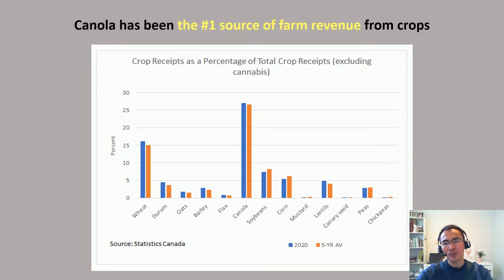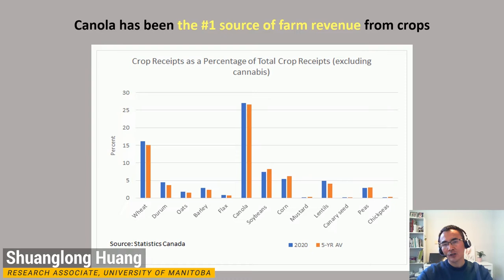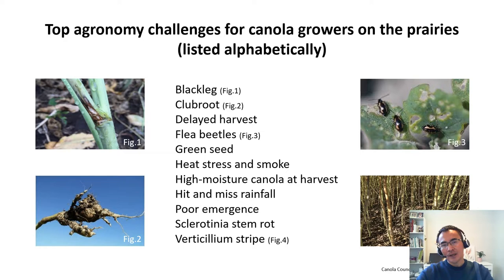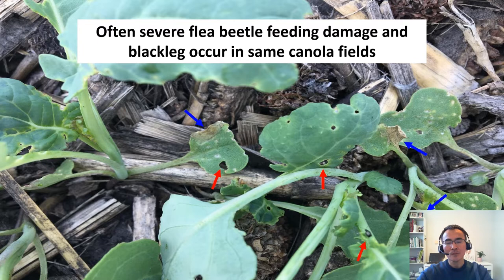What's happening when better flea beetle control meets new fungicide seed treatment for control of black leg in canola? As you all know, wheat, barley, canola, corn, soybean, and other major crops are important for Canadian agriculture. Comparing to other major crops on the prairies, canola has been contributing over a quarter of annual Canadian farm revenue for many years — that's about 10 billion Canadian dollars per year. However, there are many agronomy challenges that Canadian canola growers are facing, including abiotic stresses such as heat and drought, as well as major diseases and insects such as the devastating black leg, club root, verticillium stripe, sclerotinia stem rot, and flea beetles.